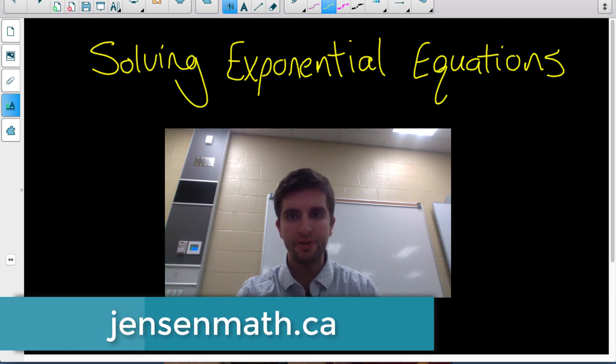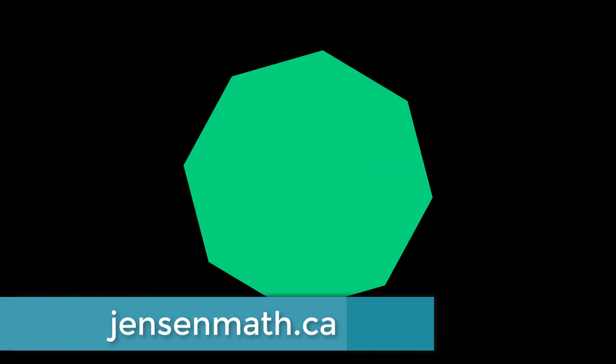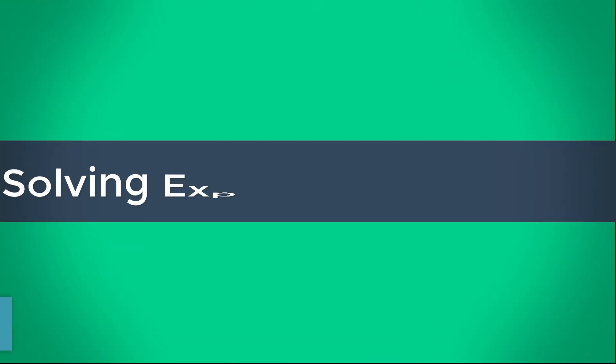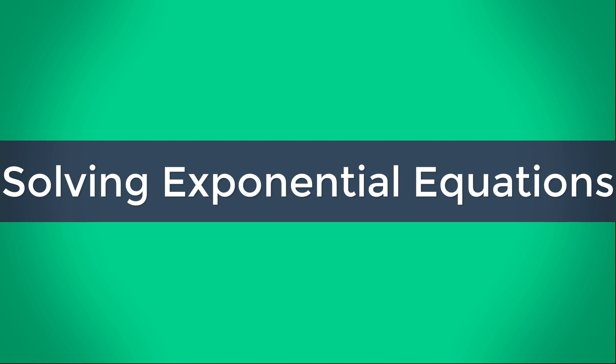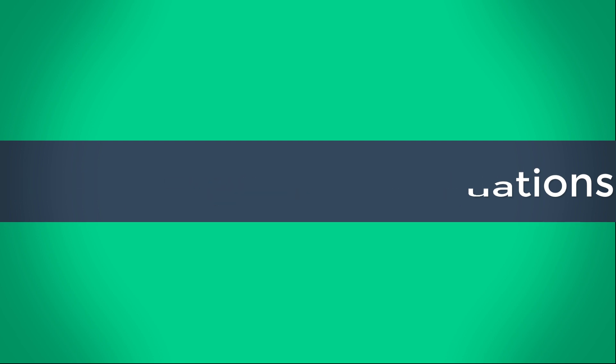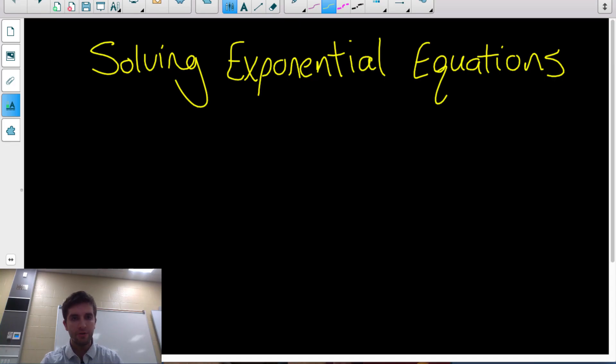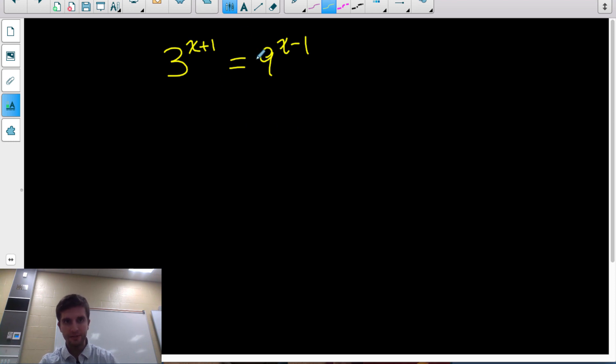Here's a quick video on how to solve a couple different types of exponential equations. First of all, what is an exponential equation? Why is this equation exponential? Well, it's because the variable, the unknown, is in the exponent. It's up here in the exponent.